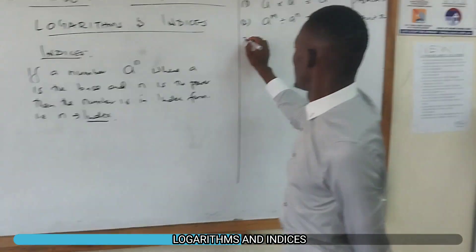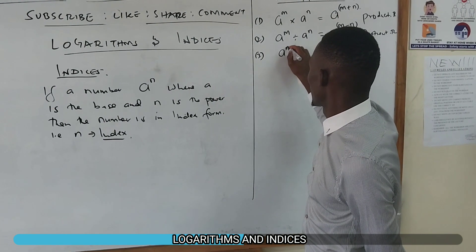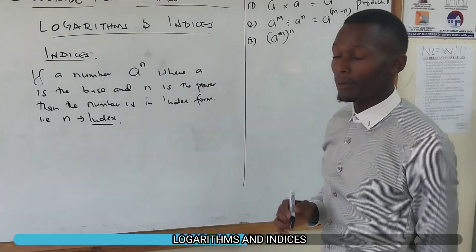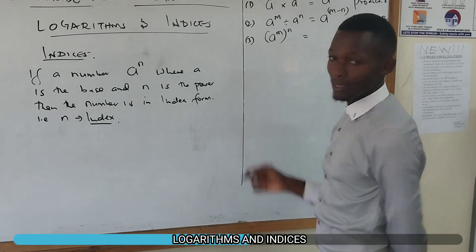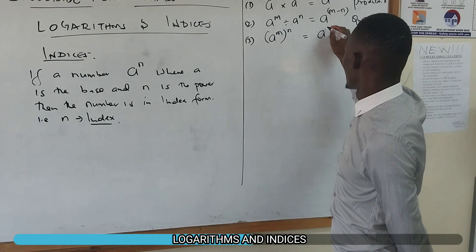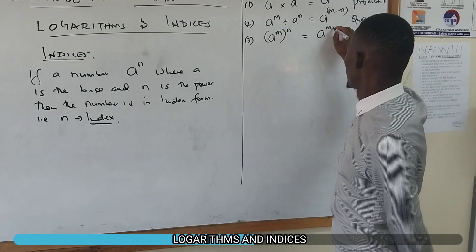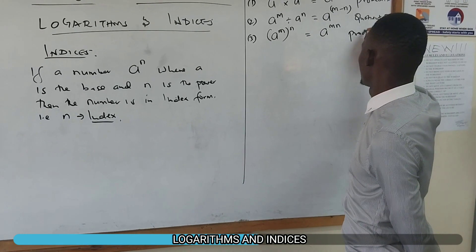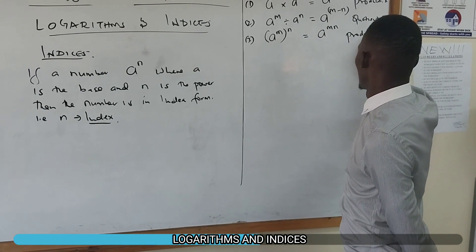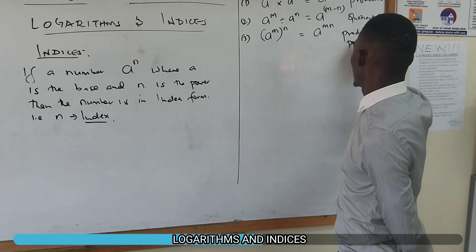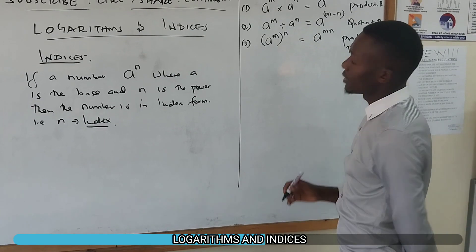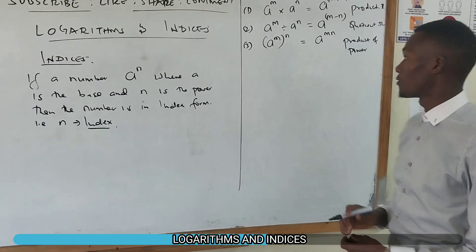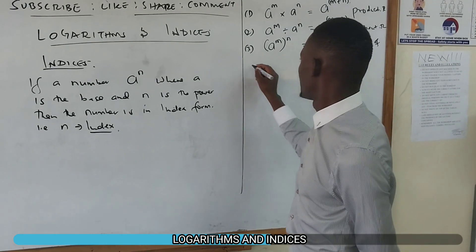Number three: if you have a number a raised to power m, then you raise it again to another power n, it's just the same as saying a raised to m multiplied by n. This is called the power of powers.